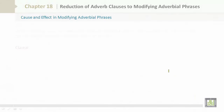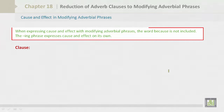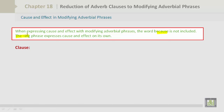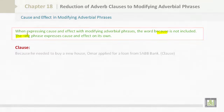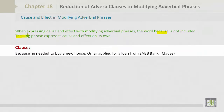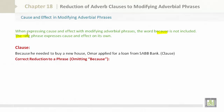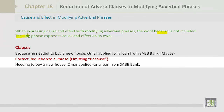Let's look at cause and effect in modifying adverbial phrases. When expressing cause and effect with modifying adverbial phrases, the word because is not included. The -ing phrase expresses cause and effect on its own. Clause: 'Because he needed to buy a new house, Omar applied for a loan from Saab Bank.' Correct reduction omitting because: 'Needing to buy a new house, Omar applied for a loan from Saab Bank.'